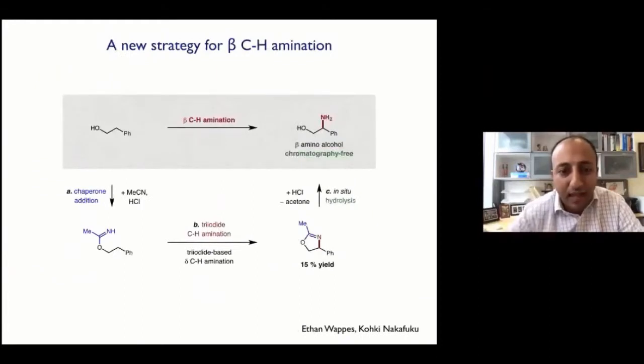The story I wanted to show you was that upon Pinner condensation of acetonitrile in this alcohol, we could access an imidate, subjecting it to these conditions. For the first time, we observed that C-N bond formation selective at the beta position. After an acidic workup, we now expose a basic amine that under simple acid-base extraction allows you to get to the beta amino alcohol, essentially in one afternoon from an alcohol to this beta amino alcohol in a chromatography free fashion.